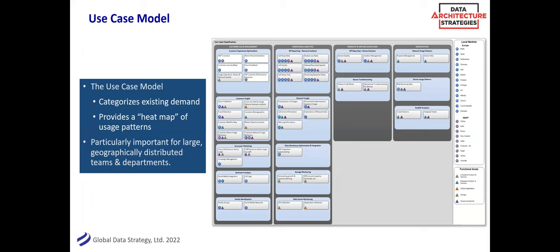A use case model is one that we don't use quite as often, but it gets at the why of all the different patterns we need to do for customer insights or consumer marketing — what are all the different groups that might be using that? I'm a visual kind of person, so it's kind of helpful to have these. You can see the heat map here on some of those KPI reporting and network analytics for this particular fictional client, and you can kind of see who's using what — which is really helpful for prioritizing what you need to be doing.